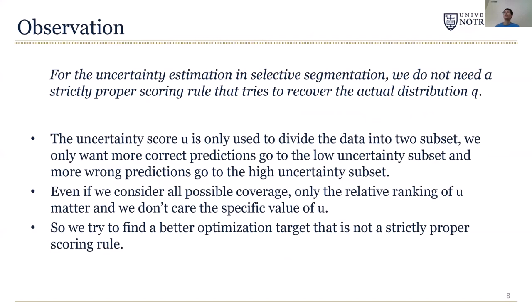So why do we discuss the scoring rule here? Our key observation is that for uncertainty estimation, we do not need a strictly proper scoring rule that tries to recover the actual probability distribution q. The uncertainty score is only used to divide the data into two subsets as we mentioned before. So we only want more correct predictions to go to the low confidence subset and more wrong predictions to go to the high uncertainty subset. Even if we are considering all possible coverage c, then only the relative ranking of the uncertainty score u matters and we don't care about the specific value of u.